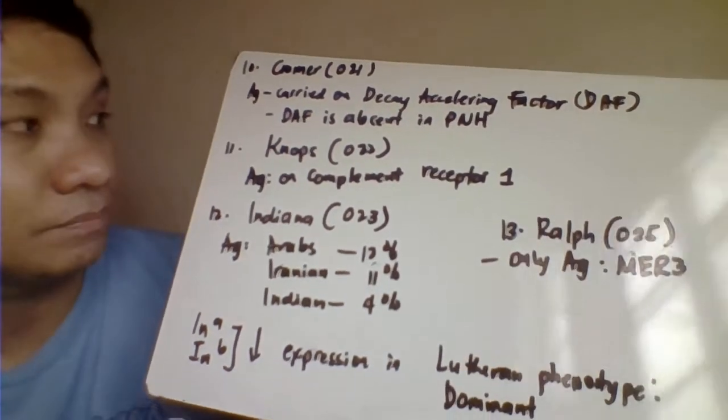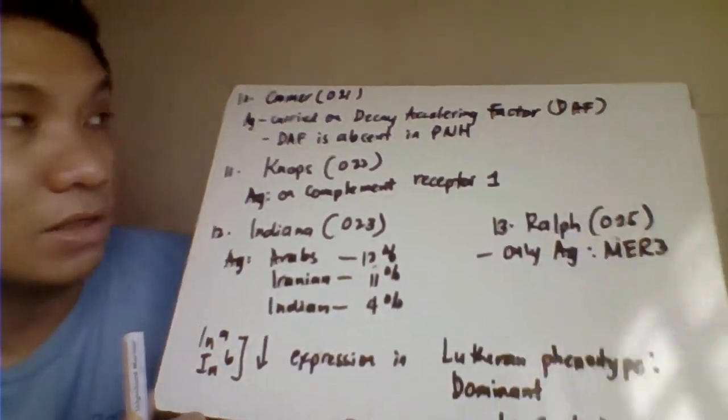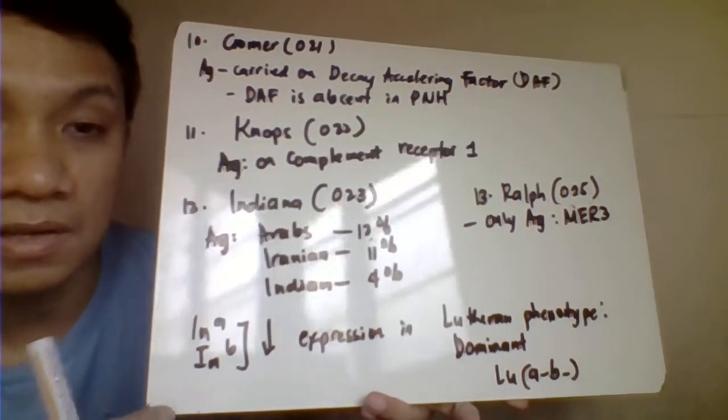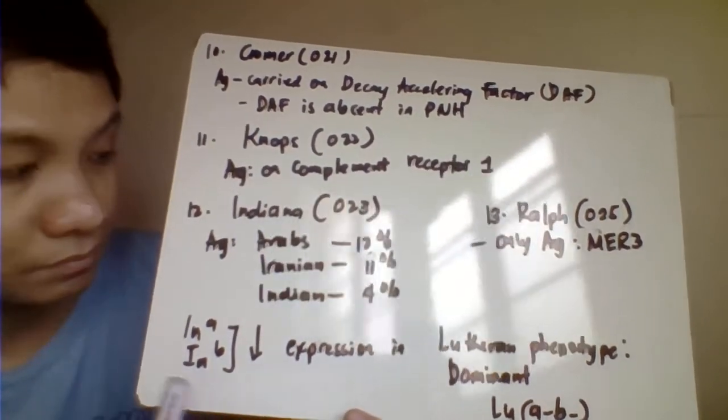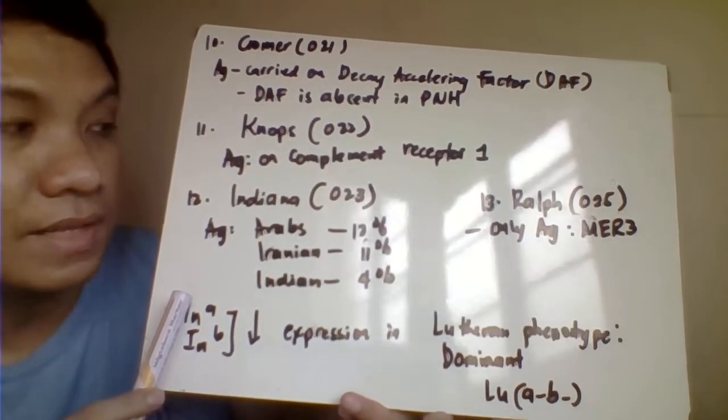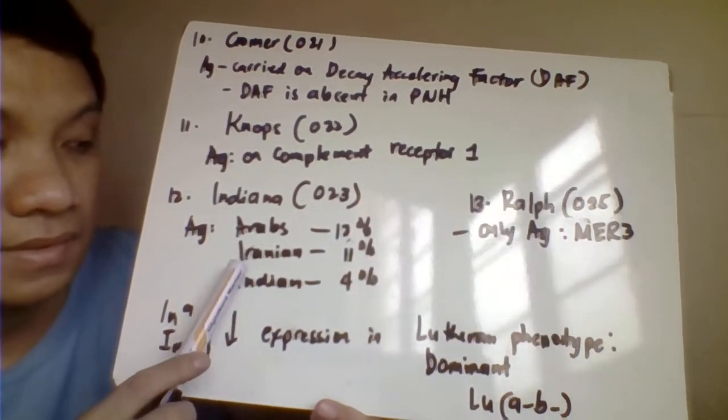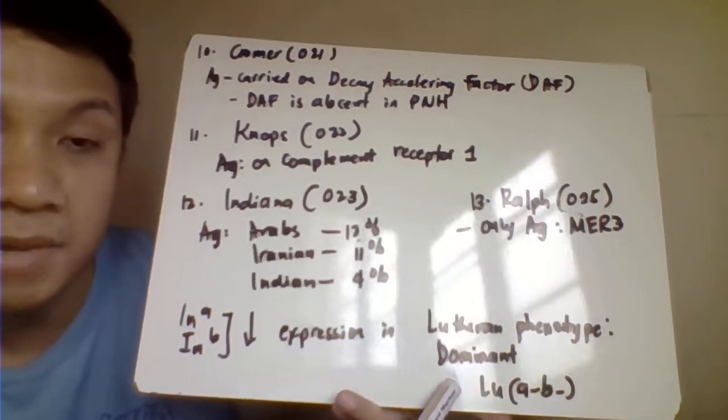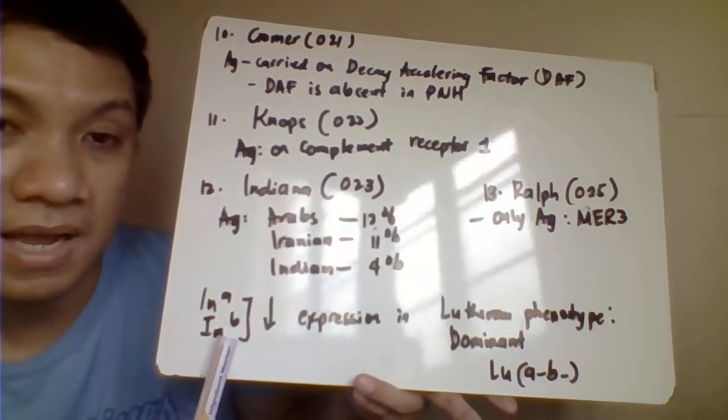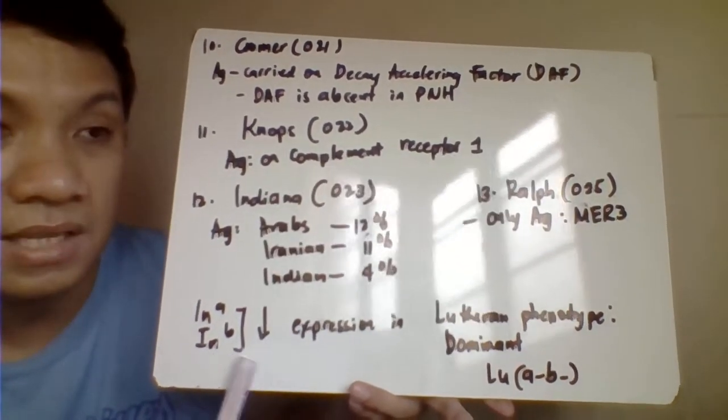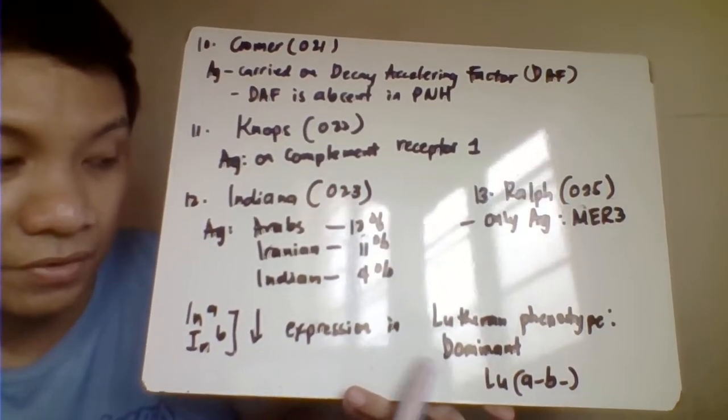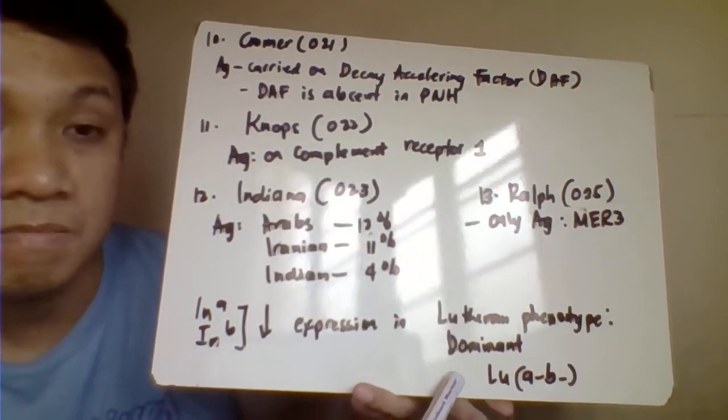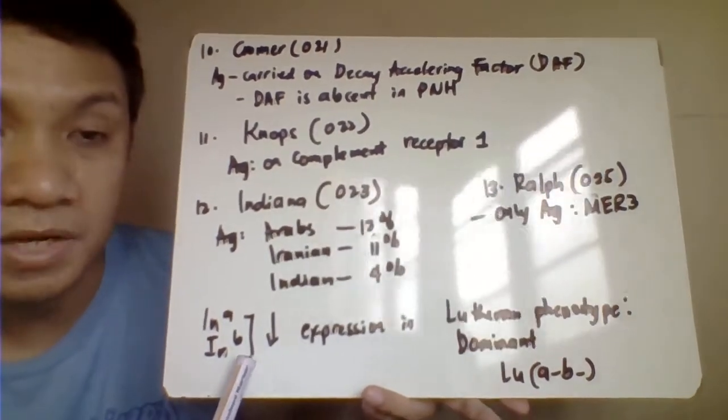Then we have the Knops blood group system 022 ISBT classification number. This one could be found in the antigen expressed in complement component receptor 1. Then we have the Indian blood group system 023, highly prevalent among Arabs, Iranians, and Indians. In the case of your Lutheran null phenotype, which is the dominant mode of inheritance, that's characterized by a decreased expression of your Indian antigen, Indian A, Indian B. They are correlated. If you have this type of null phenotype inherited by dominant inheritance, expect to have decreased expression of your Indian A, Indian B.